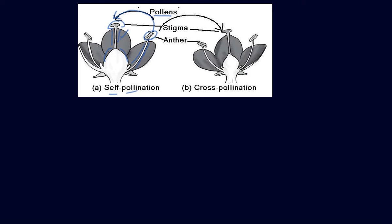When the pollen grains from one flower stick to the stigma of the same flower, it is known as self-pollination. When pollen grains from one flower stick to the stigma of another flower, this is known as cross-pollination.